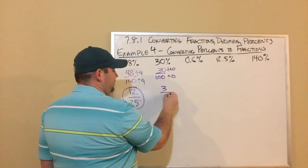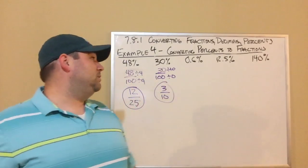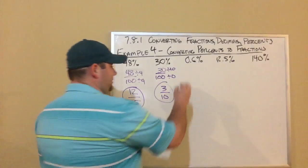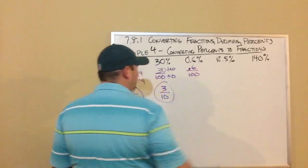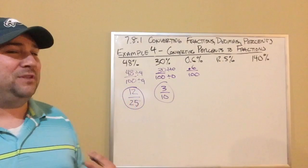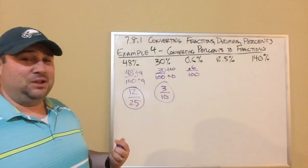So what about 0.6 percent? This is where it gets a little tricky because if I put this over 100, I got 0.6 over 100. Our problem here is I've got a decimal in a fraction. I don't want that - that's not easy to work with. So what we got to end up doing is we got to make that 6 a whole number.